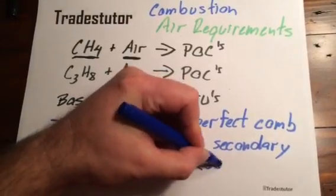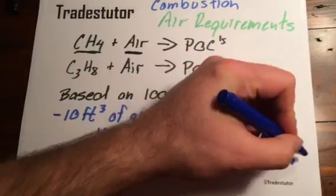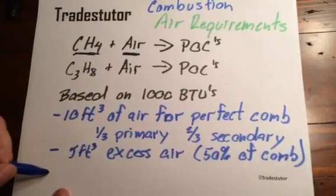And we can even write down that's 50% of combustion. And the third one, the type of air you need, is what's called dilution air.